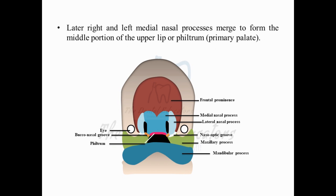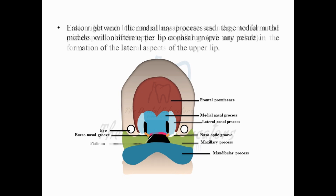Later on, the two medial nasal processes — both the right and left hand side — fuse with each other. You can see they have fused, and they help in the formation of the philtrum of the lip, which is also referred to as the primary palate. The middle protruded portion on your upper lip that you see is known as the philtrum. So these two medial nasal processes help in the formation of the philtrum of the lip.